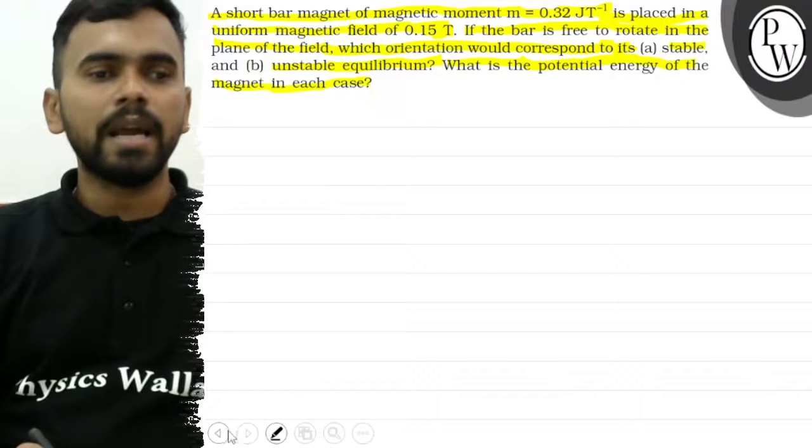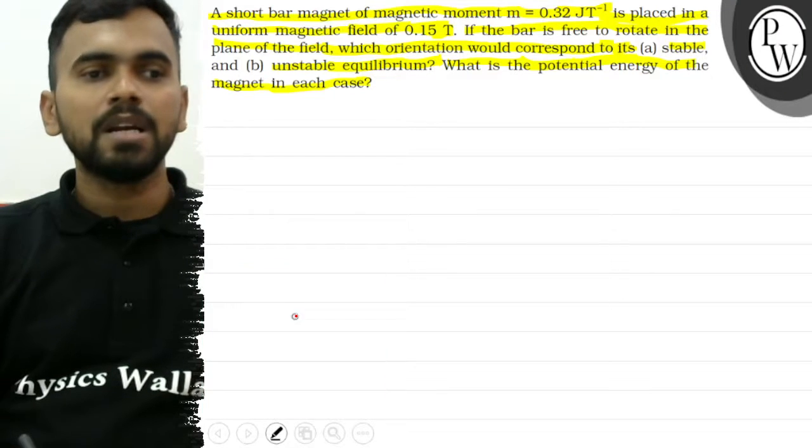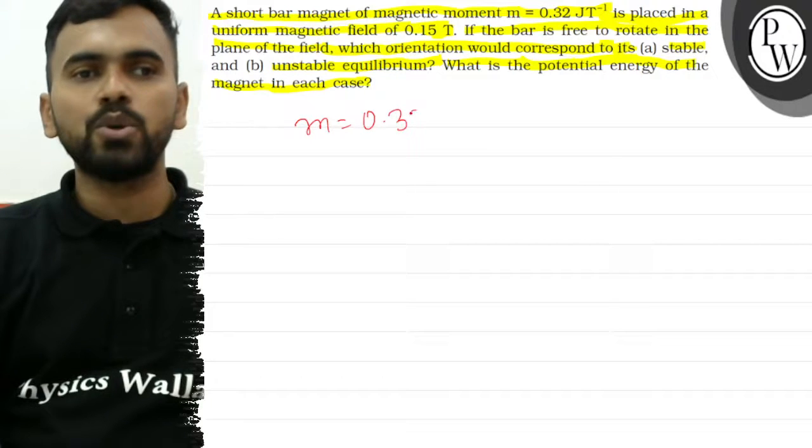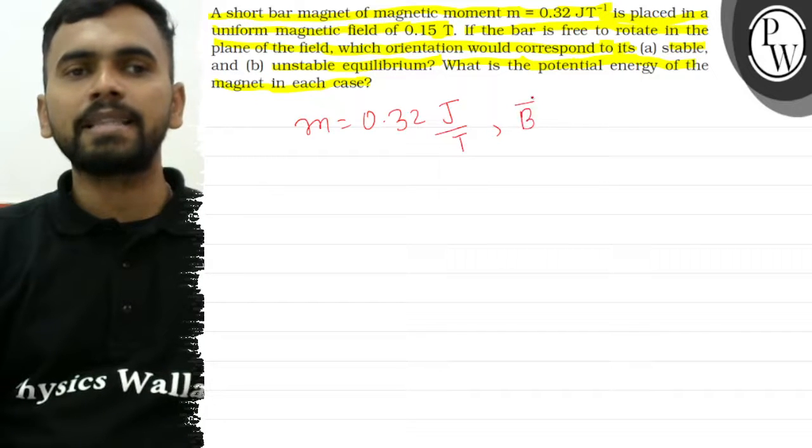In this question, we have a bar magnet. This bar magnet's magnetic moment is 0.32 joule per tesla, and the magnetic field is 0.15 tesla.